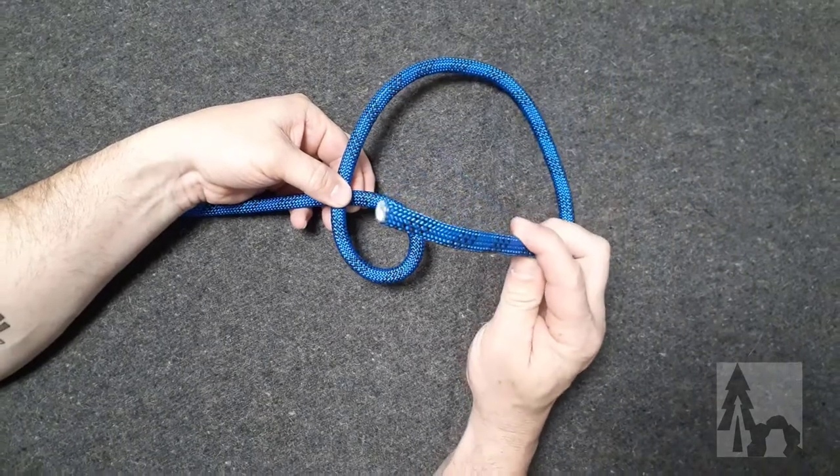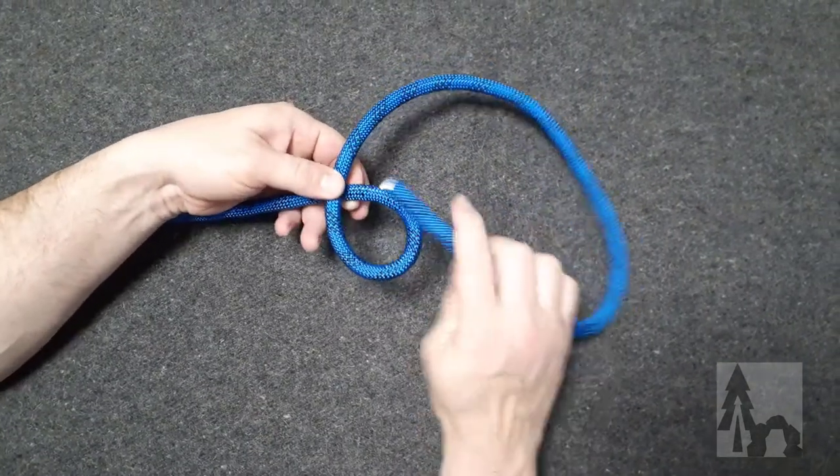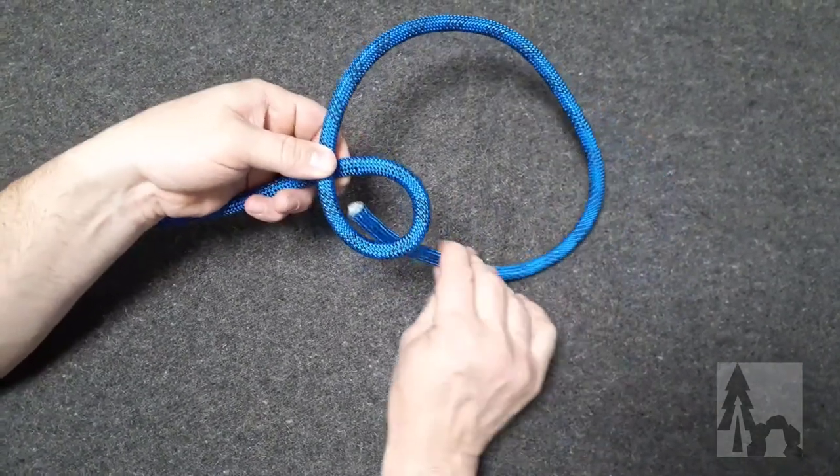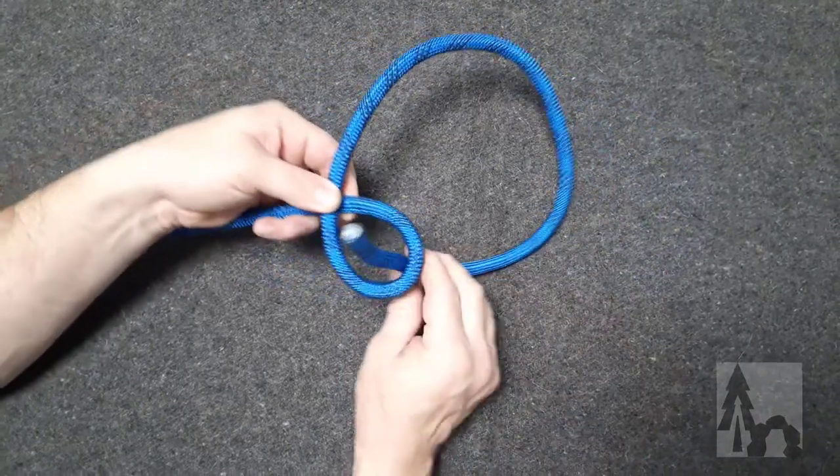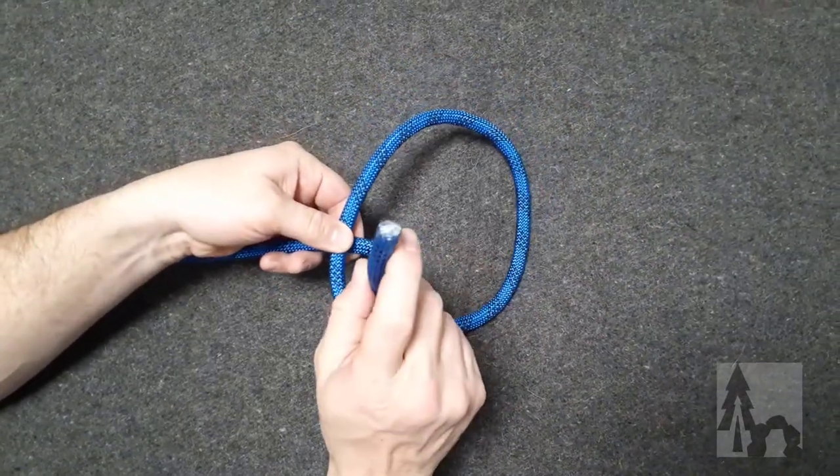Now I'm going to take my working end, which is now my rabbit, and my rabbit is going to come out of his hole. So from underneath that overhand loop, the rabbit comes out of the hole.